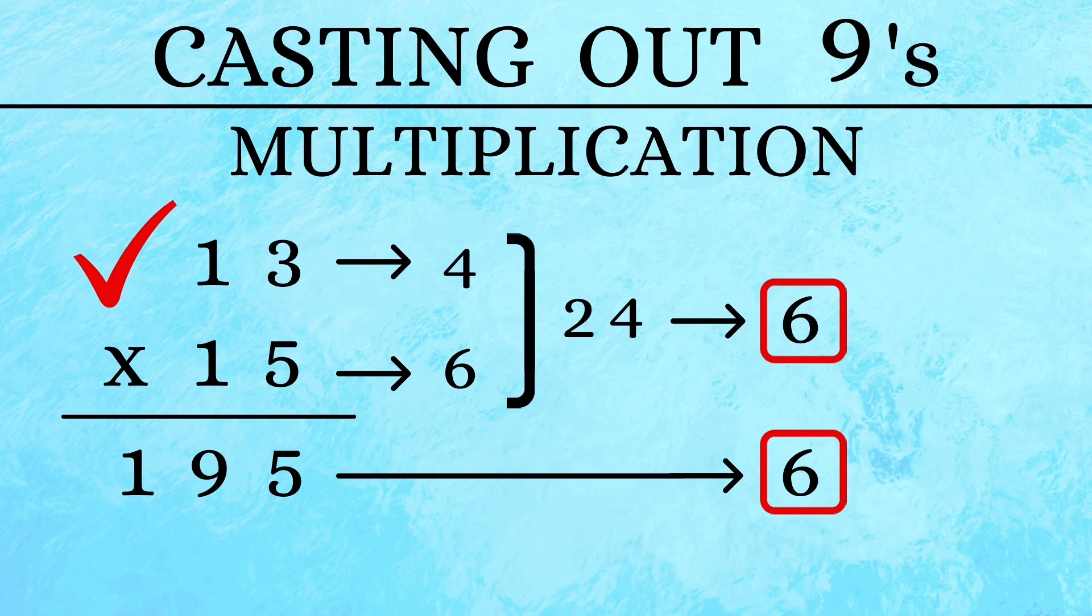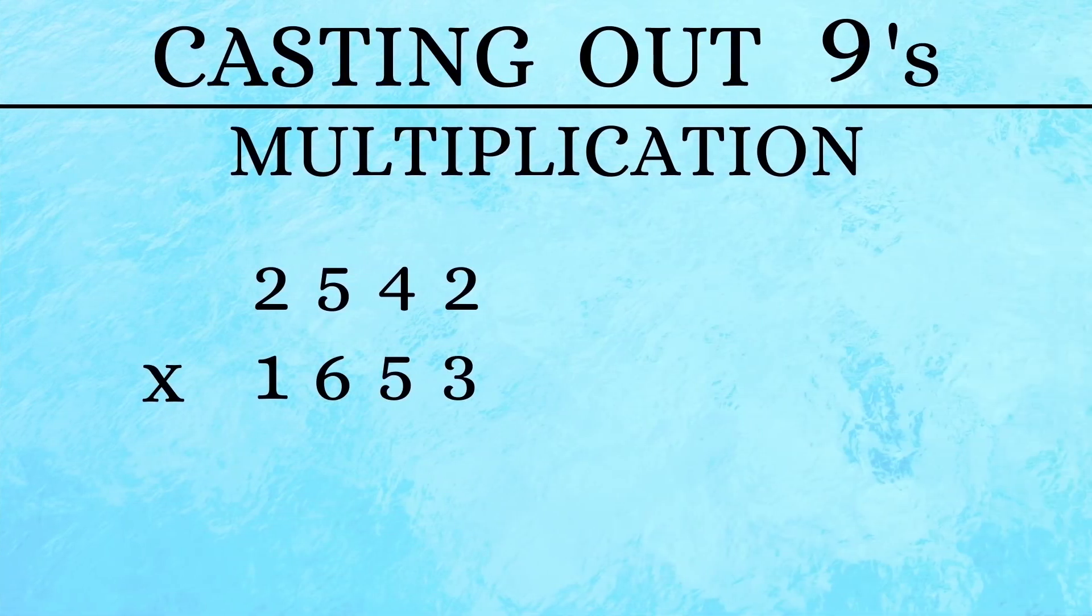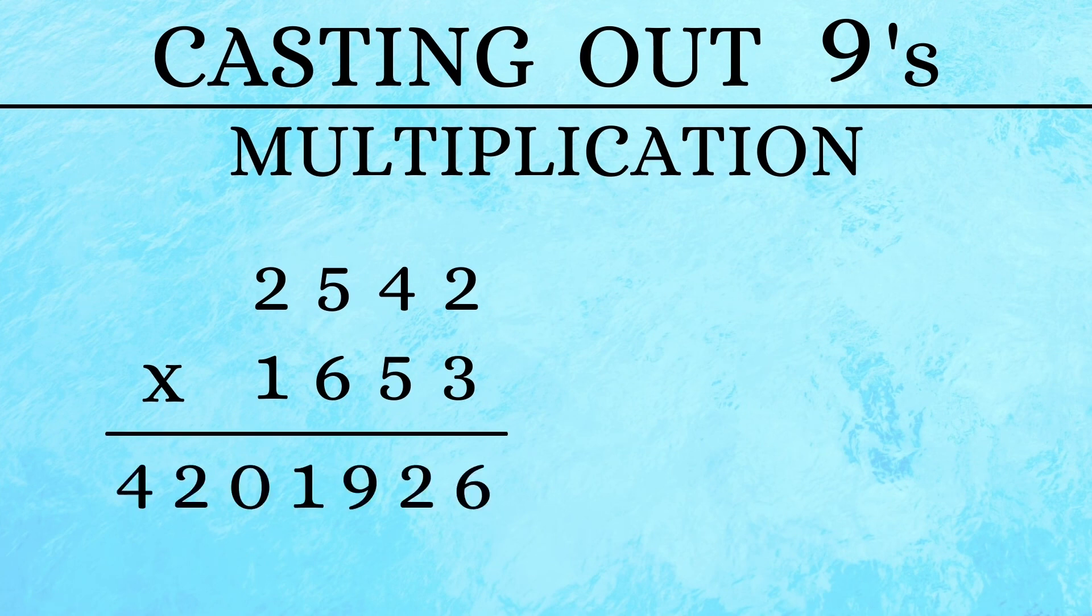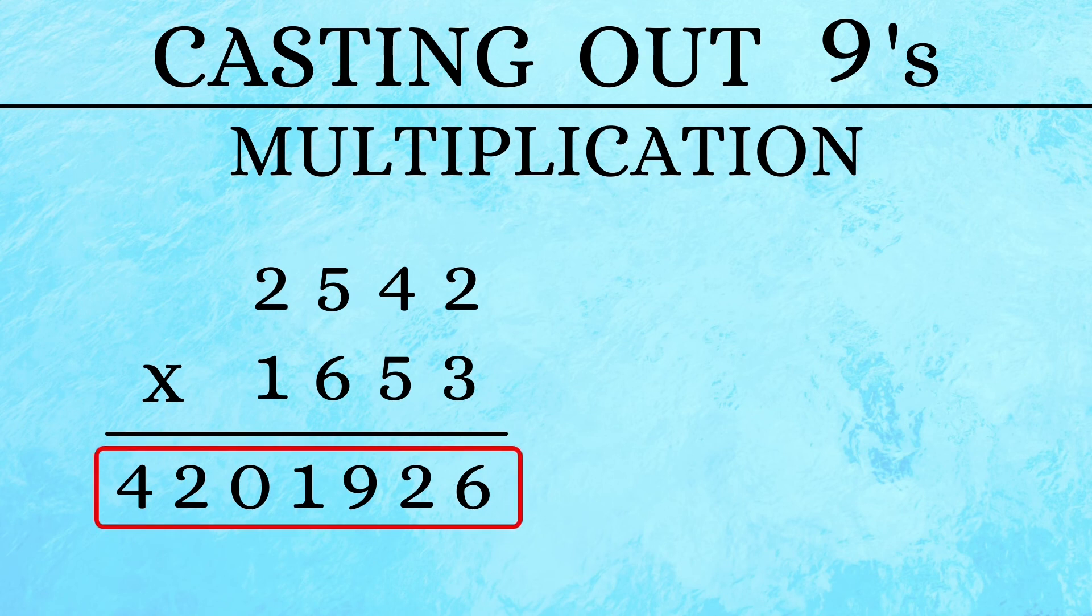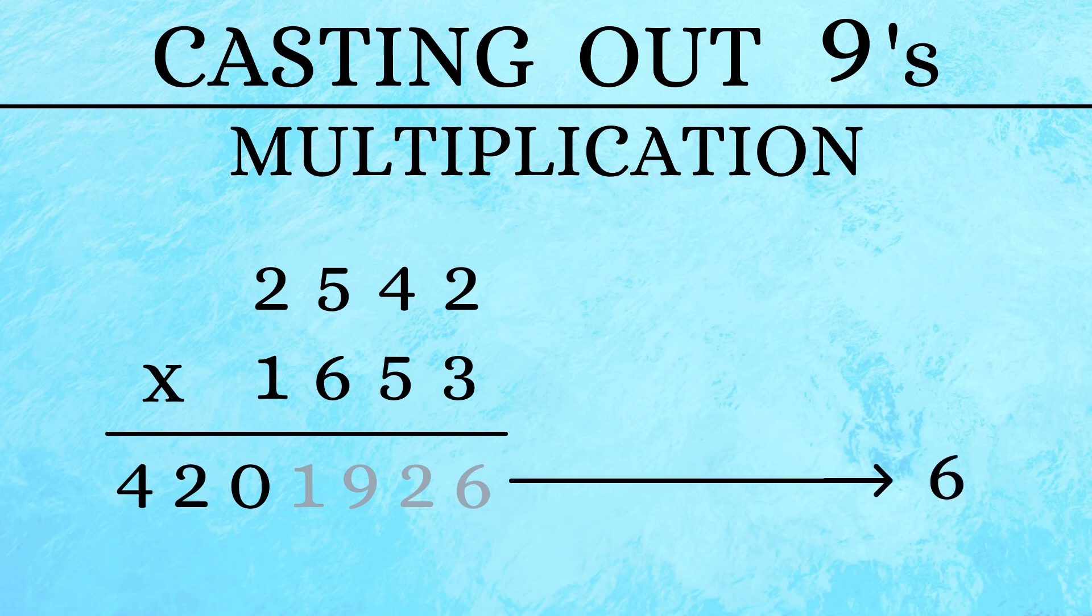Finally, we will check out multiplication of two larger numbers. The calculation is already done and the answer is given. Now let us start adding up the digits of our answer. We cancel out the 9 first. 1, 2, and 6 makes a 9. So cancelling out that leaves us with 4 and 2 which add up to a 6.